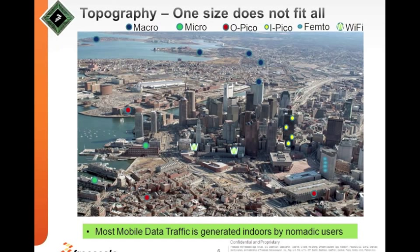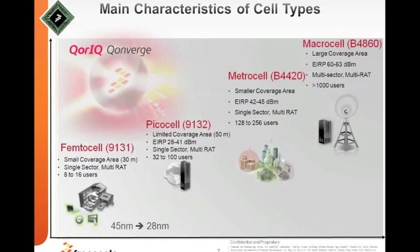Another key observation is that most of the mobile data traffic is really generated indoors and by nomadic users — this is from a Cisco study. This is a very interesting paradigm, and we'll see how a solution can be devised here.